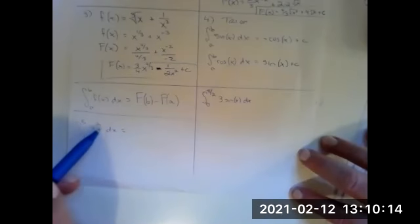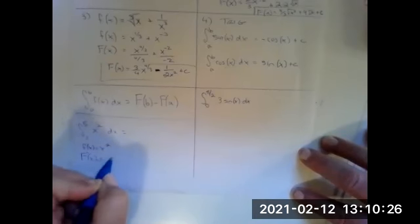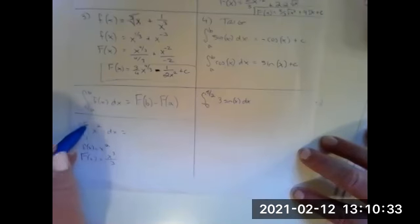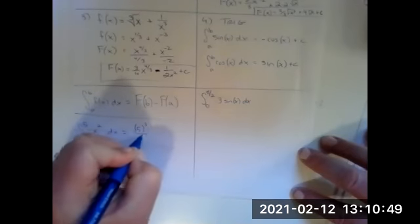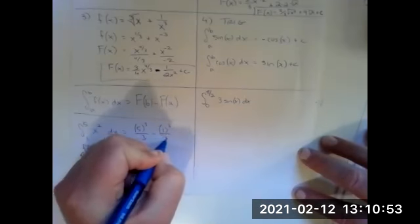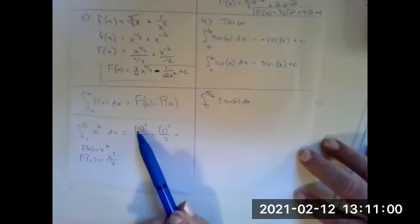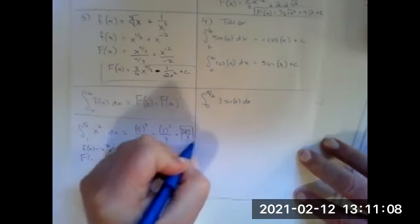Area under the curve from one to five of X squared dx. If little f of X equals X squared, the antiderivative is X to the third over three. Since we're looking at the area from one to five, we substitute five into the antiderivative and subtract the substitution of one. So five cubed over three minus one cubed over three gives us the area. Five cubed is 125, one cubed is one, so 124 over three is our area under the curve.